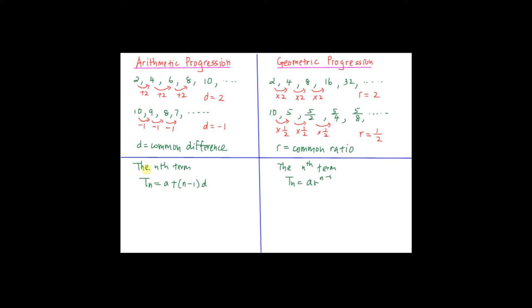Now I'm going to show you the nth term for arithmetic progression and geometric progression. For arithmetic progression, the nth term is tn = a + (n−1)d. So what is the nth term? If you look at this arithmetic progression, this is called the first term, t1 = 2. The second term t2 = 4, and the third term t3 = 6. Using this formula, when n = 1, t1 = a + (1−1)d, where 1 minus 1 is 0, therefore t1 = a. So a is your first term.